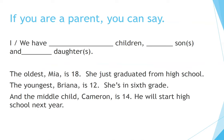If you are a parent, you can say: I, or we, have three children — one son and two daughters. The oldest, Mia, is 18; she just graduated from high school. The youngest, Brianna, is 12; she's in sixth grade.